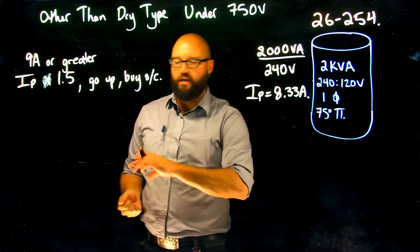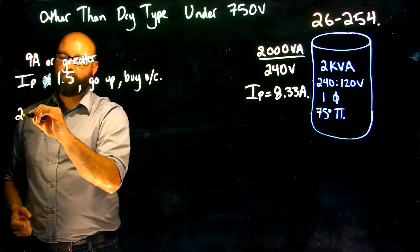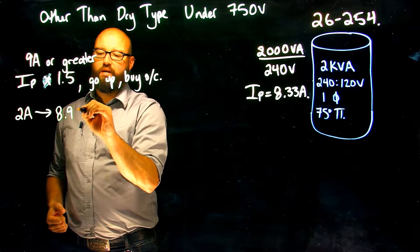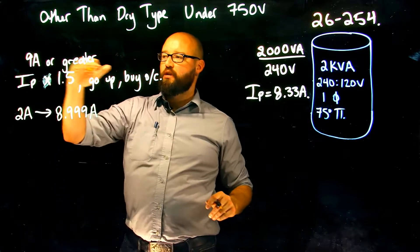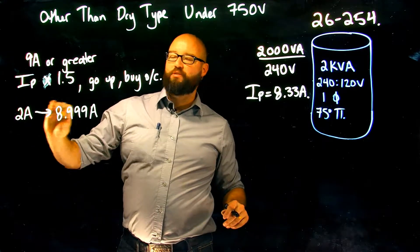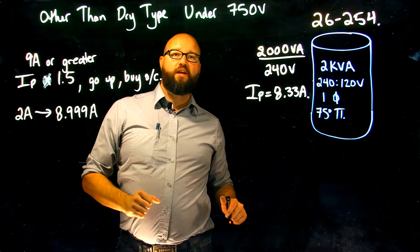And if I continue reading there's another exception that says if it's less than 2 amps. So let's write it like this: if it's from 2 amps up to 8.999 amps, because as soon as we hit 9 we're into the 150 percent. If it's between 2 amps and 8.999 amps, it tells me I cannot have an overcurrent rated or set at more than 167 percent.